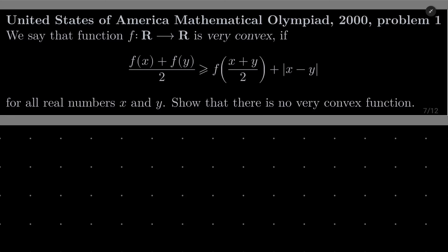Hello friends. In this video I'd like to solve the following problem from the United States of America Mathematical Olympiad, year 2000, problem number 1. We say that a function f from the real numbers into itself is very convex if f(x) + f(y) over 2 is greater than or equal to f((x+y)/2) plus the absolute value of x minus y, for all real numbers x and y. The reason you haven't heard of very convex functions is that we are going to show that no such function exists.